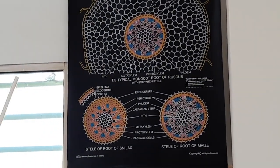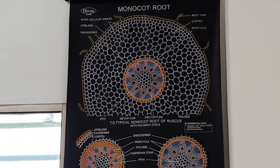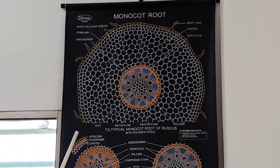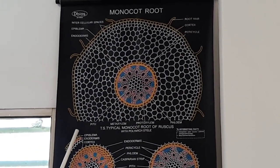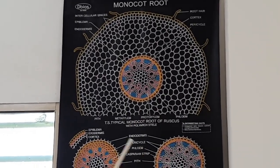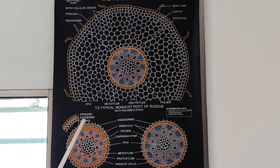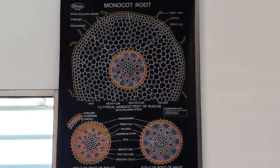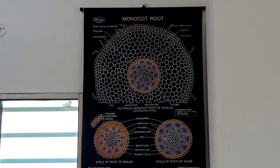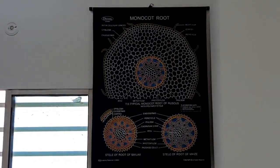This is the monocot stem. T.S. means transverse section. This chart shows the transverse section of the monocot stem — how the cells are arranged inside.